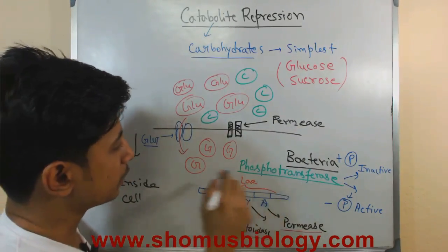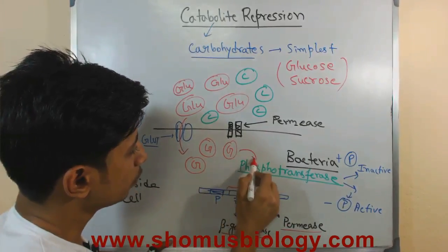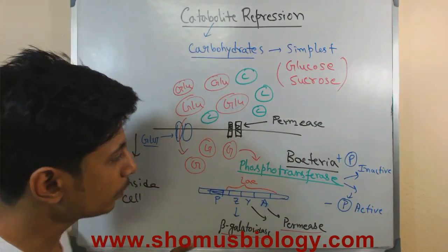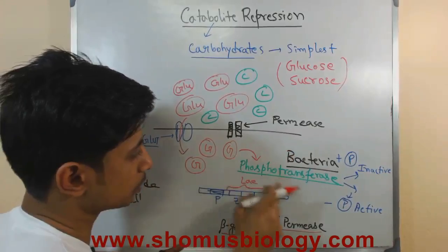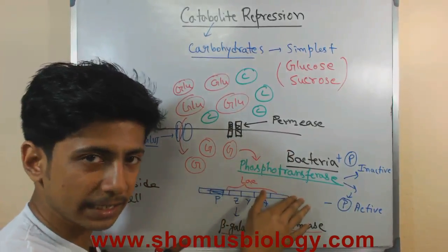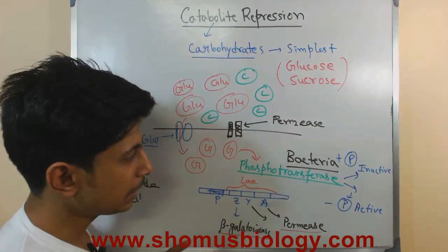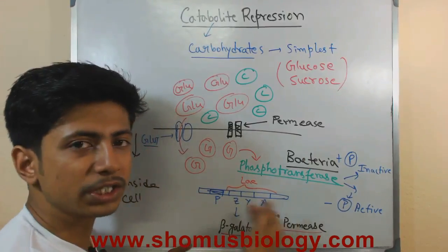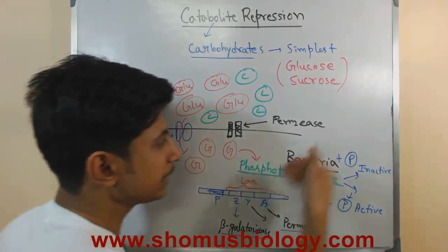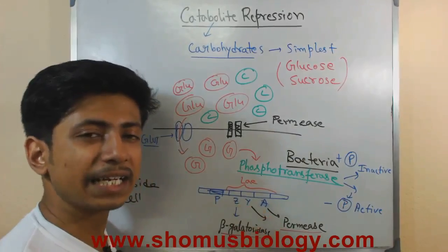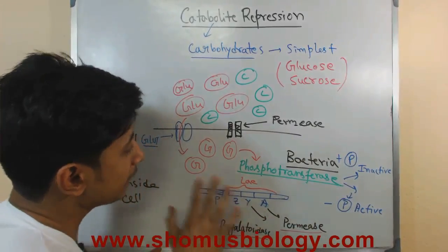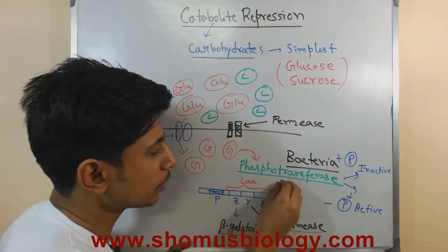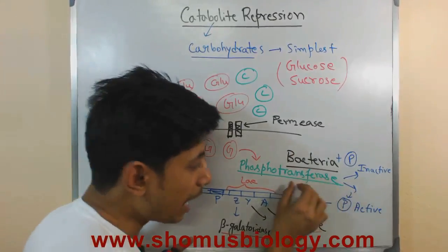When glucose is present, glucose keeps the phosphotransferase in its active form by causing it to lose its phosphate group. This means glucose is blocking or preventing normal phosphotransferase functionality. Normally, in its phosphorylated condition, phosphotransferase helps in transcribing lac genes Z, Y, A by helping activate other proteins like adenylate cyclase. But when glucose is present, this activated phosphotransferase instead inhibits enzyme production.